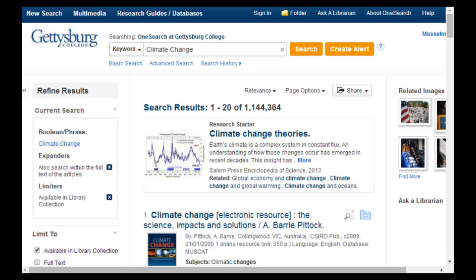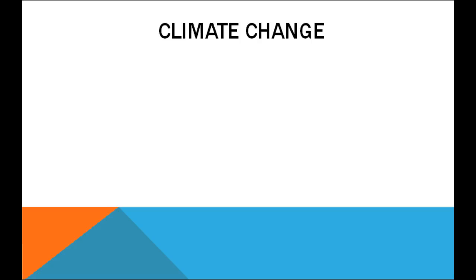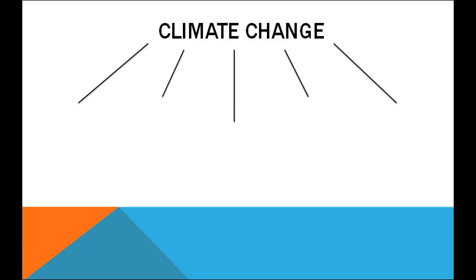Looking at the topic of climate change — this is a huge subject. Let's use a concept map to make this more manageable. To start building your concept map, ask yourself what the major issues or themes related to climate change are. Is there something you have discussed in class, read in the news, or just have a personal interest in? Asking these questions helps identify areas that you might focus on in your research.